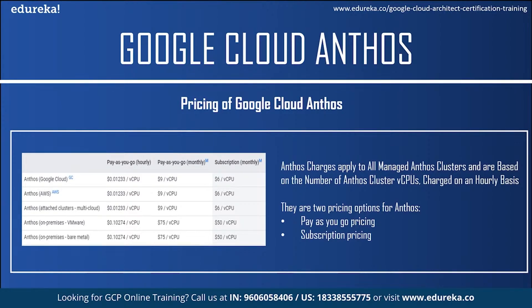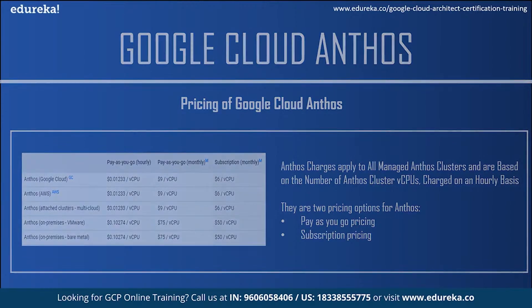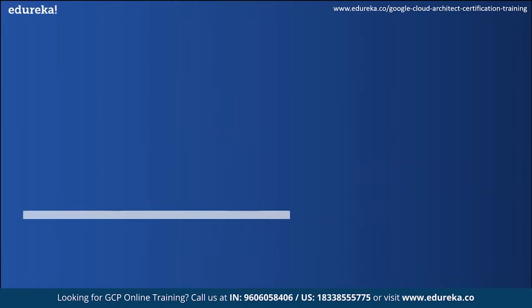The good news is if you are a new Anthos customer, you can try Anthos on Google Cloud for free up to $900 worth of usage or for a maximum of 30 days, whichever comes first. During this trial period you are only billed for the applicable fees and then credited at the same time for those fees up to $900, but you are still billed for the applicable infrastructure usage during the trial.